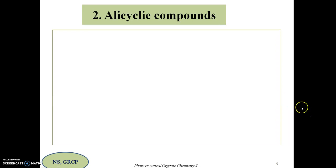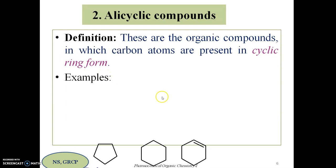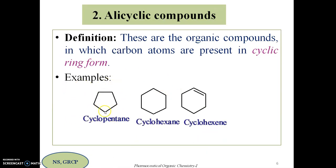Next are alicyclic compounds. The name itself indicates there will be a cyclic system — these are organic compounds in which carbon atoms are present in cyclic ring form. The first example is cyclopentane, where each corner of the pentagonal figure has a CH2 unit, giving 5 carbons in a ring. The saturated hydrocarbon is pentane, and with cyclo- prefixed it becomes cyclopentane. Similarly, the next one has 6 carbons in the ring, so it is called cyclohexane.